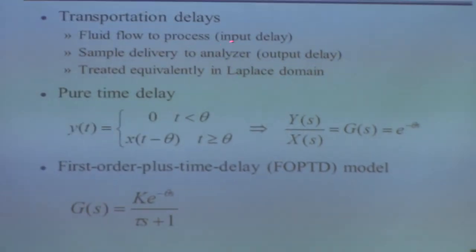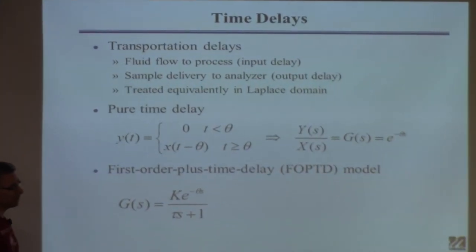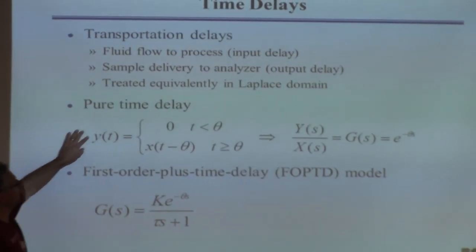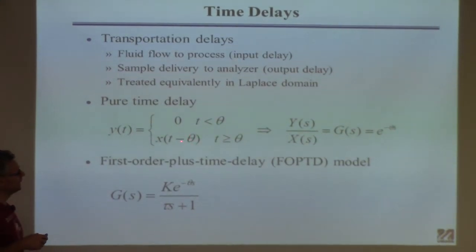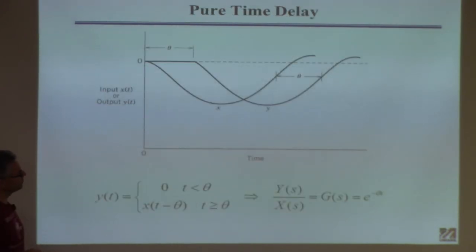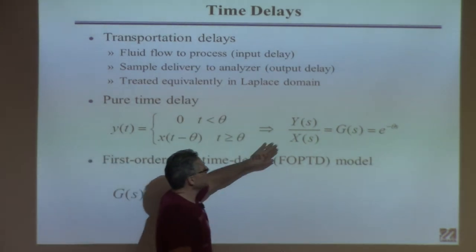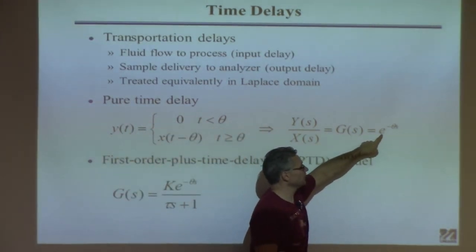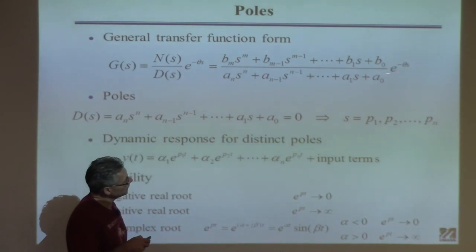Time delays may be due to transportation flow — that's called an input delay — or because you have to analyze a sample, which is called an output delay. In any case they're treated the same way. This is called a pure delay: Y is just a delayed version of X, and theta is the time delay. The Laplace transform of a pure time delay gives a transfer function of e to the minus theta·s. The simplest and most common model is the first-order plus time delay model: K over (tau·s plus 1) times e to the minus theta·s. The key question when we start talking about control is how big theta is relative to tau.